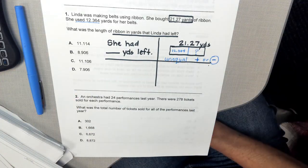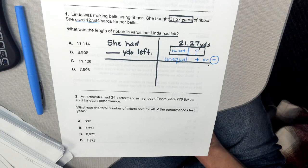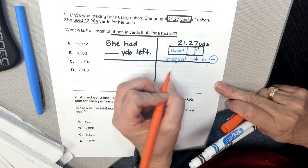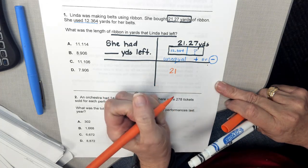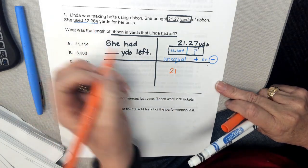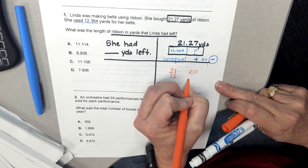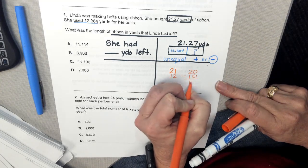So at this point, what I would want to do is make a quick estimate. I'm going to round this to 21. And I'm going to round this to 12. Or I could say 20 minus 10, which would give me about 10.